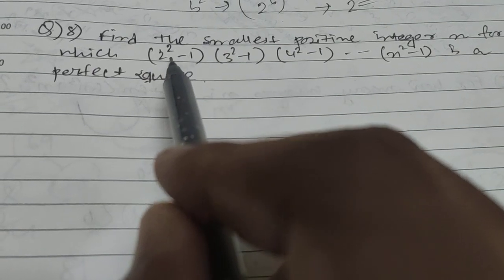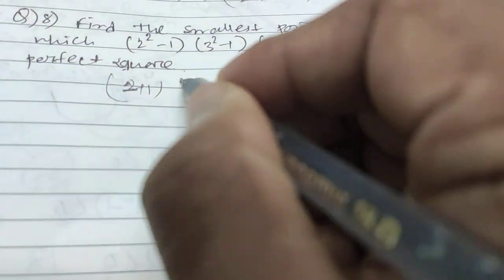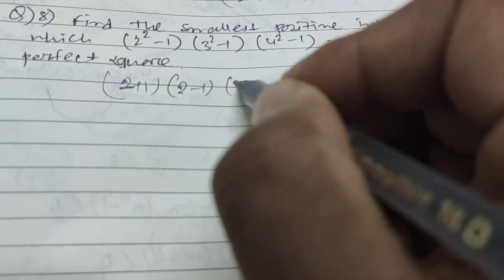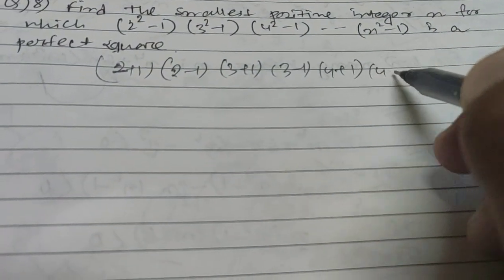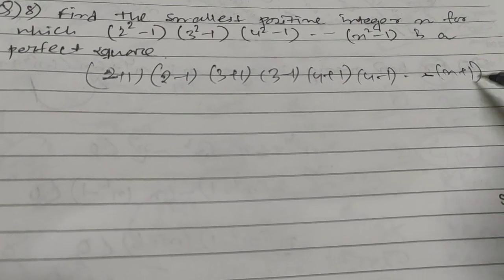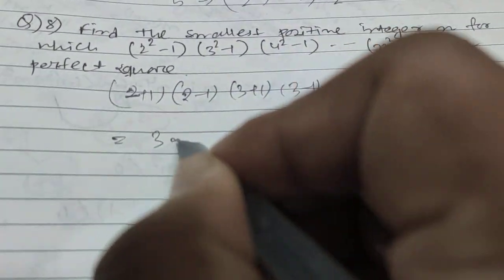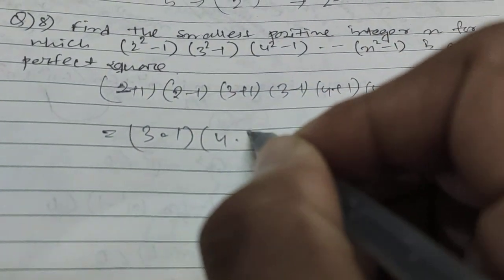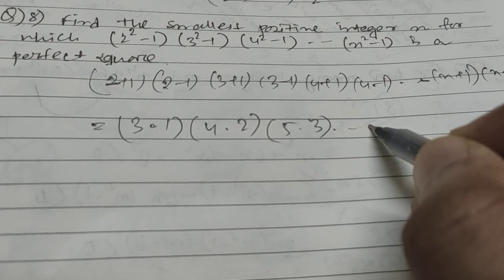Just divide each term in two parts using the formula a²-b² = (a+b)(a-b). So this becomes (2+1)(2-1) × (3+1)(3-1) × (4+1)(4-1)... all the way to (n+1)(n-1). That gives us 3×1 × 4×2 × 5×3 and so on.